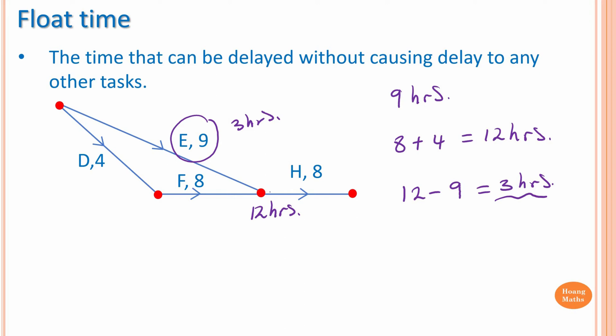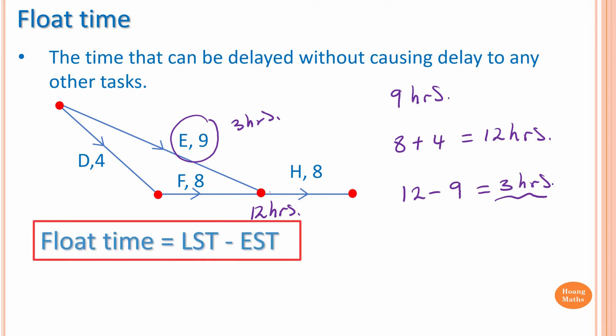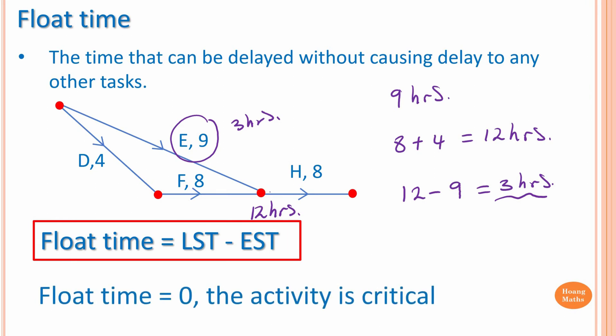In other words, activity E can start three hours later without delaying any other activities. Float time is the latest starting time minus the earliest starting time. Please take note: if float time is zero, the activity is critical. This will help us find the critical path.